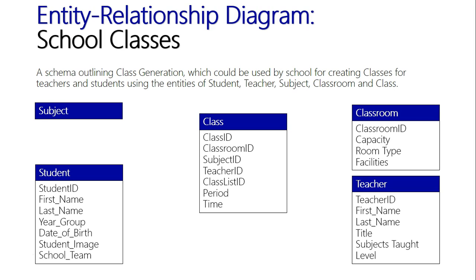Does the room have a projector, smart boards, or anything like that to be used with the class? Every class is also for a specific subject — does it have particular requirements? For example, tech has WHS requirements and can't have more than 24 students per class, so what is the max capacity of students that can be in that class?